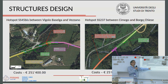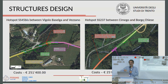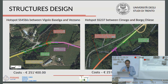Another case is the crossing between Vigolo Baselga and Vezzano, with a significantly higher cost of 251,000 euros. In this case, a mix of interventions is required: an overpass must be built — overpasses are very costly — along with an anti-collision alert system, making the total more expensive.